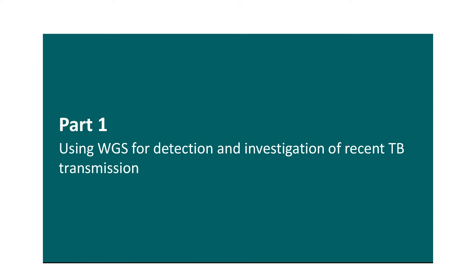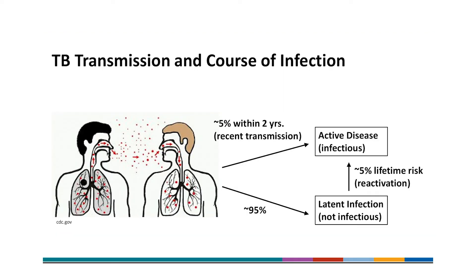First, I will go over some background for how to use WGS for detection and investigation of recent TB transmission. TB is caused by mycobacterium tuberculosis and is transmitted through the airborne route. Five percent of people who are infected develop active TB disease within two years — these people are infectious and can carry on the chain of transmission. The other 95 percent develop latent TB, which is not infectious. However, about five percent of people with latent TB will reactivate and develop active disease at some point in their life. So two main strategies for eliminating TB are detecting and treating latent TB infection, and detecting and interrupting ongoing transmission, which is the focus for today's presentation.